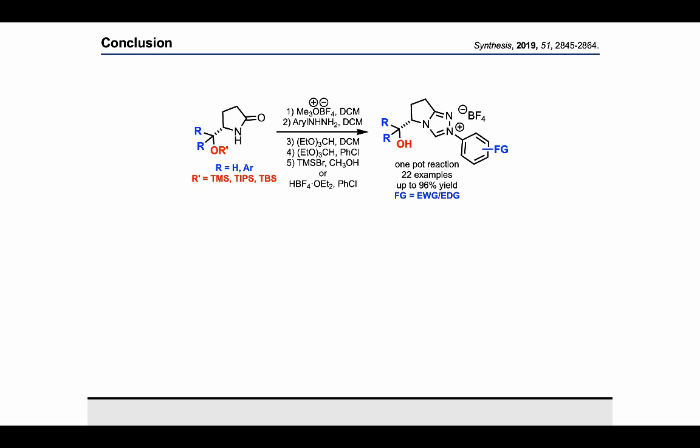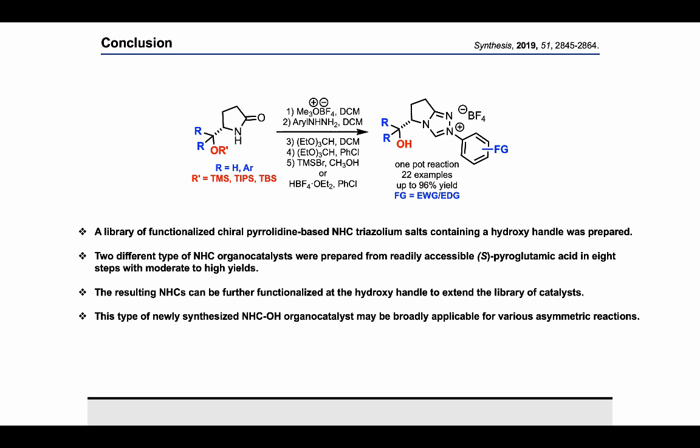Coming to the end, we synthesized pyrrolidine-based enantioselective NHC carbenes having an OH group. In addition, we synthesized two different types of NHC carbenes: one is steric and another one is less steric. The steric type of NHC carbene is applicable in CSP asymmetric catalysis with high yield. The obtained NHC carbenes can be further functionalized as a diastereomeric acetal to exchange a library of organocatalysts. NHC carbene OH-group organocatalysts may be broadly applicable for various organocatalytic asymmetric reactions.